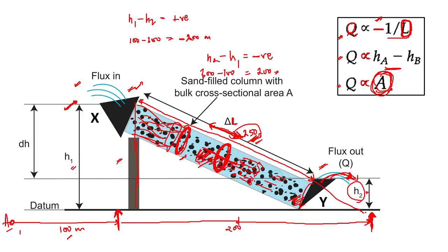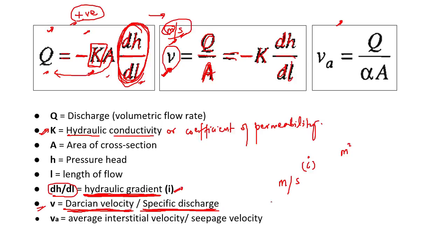We should not consider only the complete area of cross-section — but we do consider it here. For that we have a solution: Va, which is the average interstitial velocity or seepage velocity. It is simply V divided by alpha — the porosity. So Va equals Q divided by A, divided by alpha.